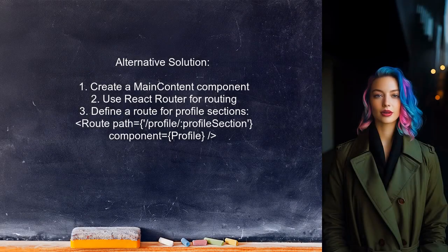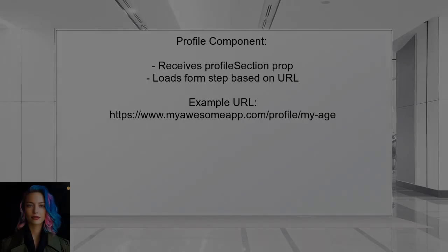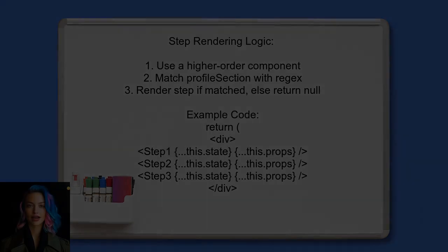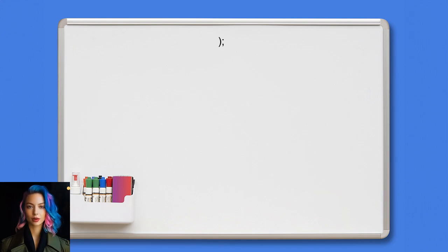Another user shares their approach using a component called Main Content with several routes via React Router. One route handles profile sections, allowing the URL to change based on the current step. The profile component receives a profile section prop from the URL — for example, if the URL is profile slash my-age, the profile component loads the corresponding form step for the user's age. Each step is rendered conditionally based on this prop, using a higher-order component that checks if the profile section matches the current step, rendering the appropriate markup or returning null if it doesn't match.